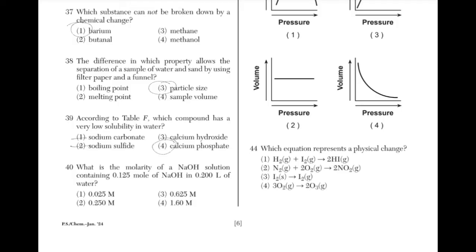What is the molarity of an NaOH solution containing 0.125 mol of NaOH in 0.2 liters of water? The equation for molarity is moles of solute divided by liters of solution. 0.125 mol divided by 0.2 L is equal to 0.625 M — choice 3.